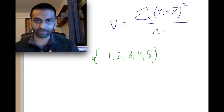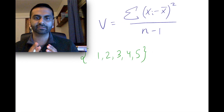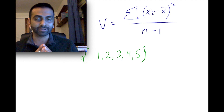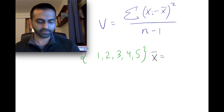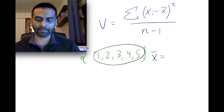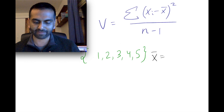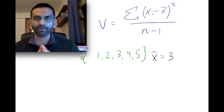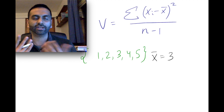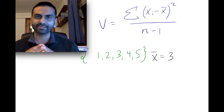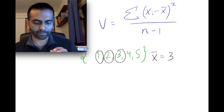Let's say we want to find the variance of this data: five numbers — 1, 2, 3, 4, and 5. The x̄, meaning the average of this sample, is found by adding them up and dividing by 5. If you add them up, you get 15, so 15 divided by 5 is 3. The concept of variance or standard deviation is asking how spread out each of these numbers is compared to their average.